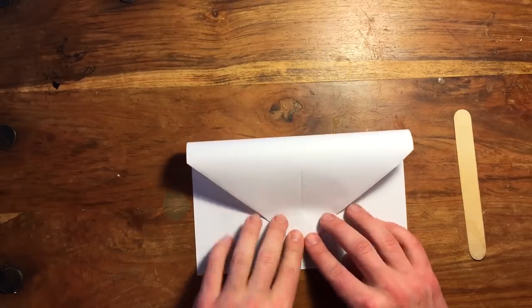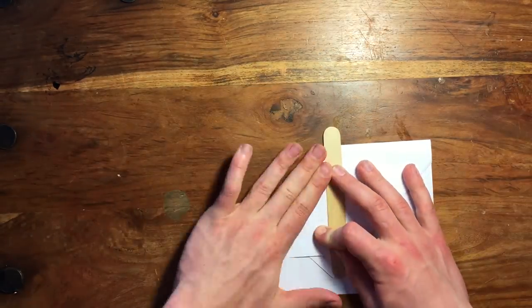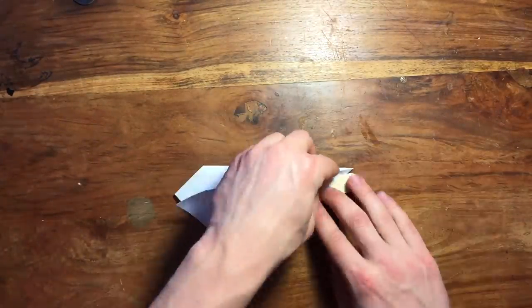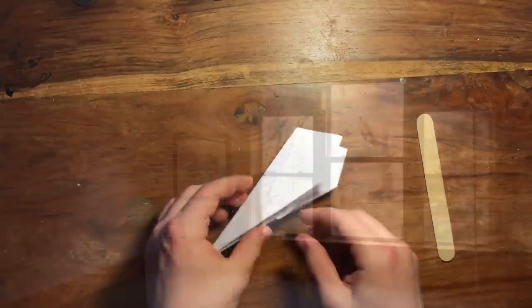Next fold the entire front part down so the tip is about an inch from the end. Then again fold the top corners over using the popsicle stick, then fold up the small bottom piece and fold the whole plane in half. Finally fold down the wings so they are level with the bottom edge. And now you are ready to fly.